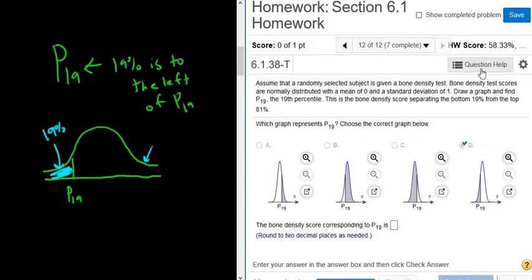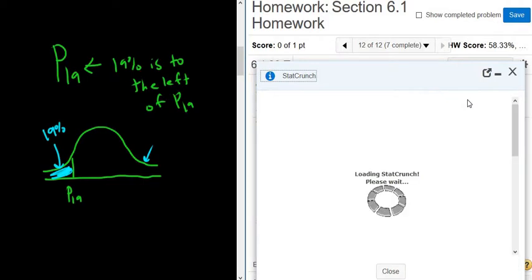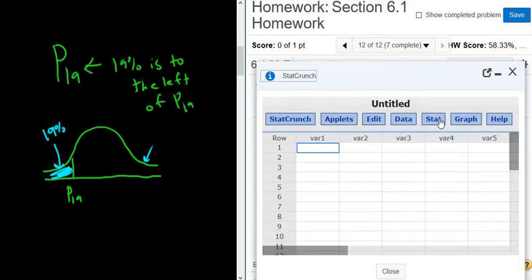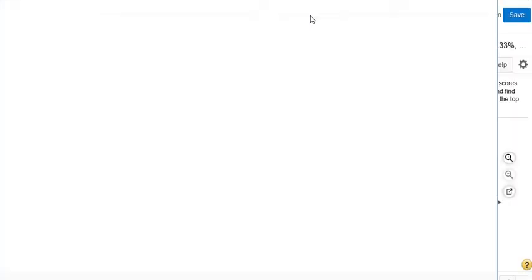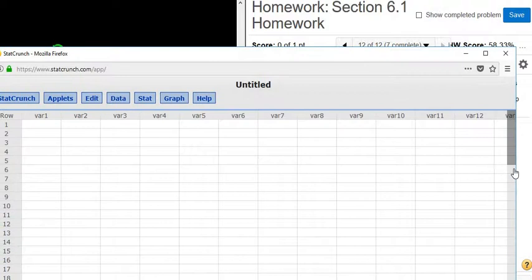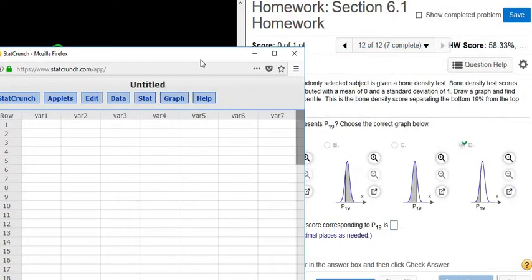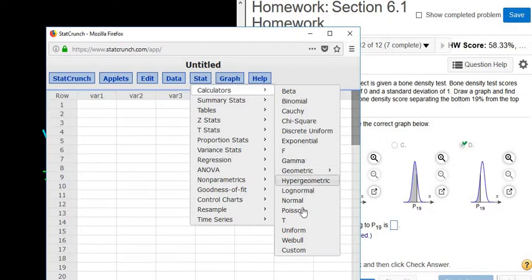And to find the percentile, all we do is we go to StatCrunch. So we go to question help, StatCrunch. Then you go to Stat. Actually, let me detach it to make it easier to look at first. All right, then you go to Stat, Calculators, Normal.